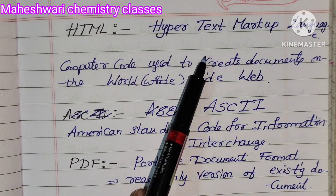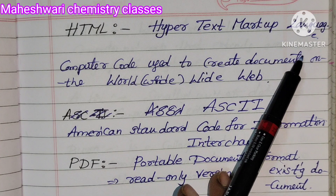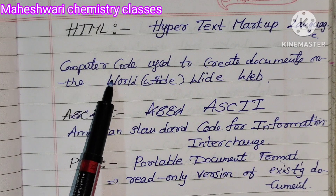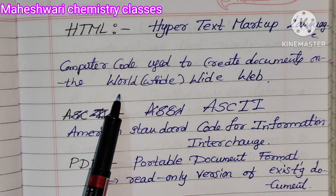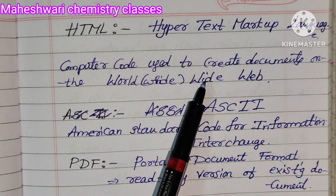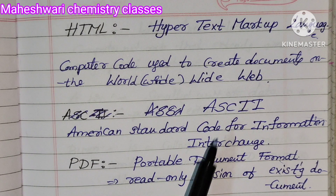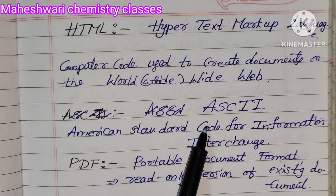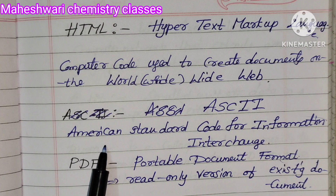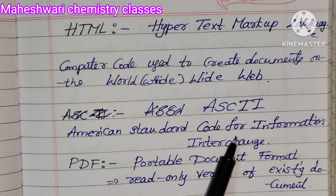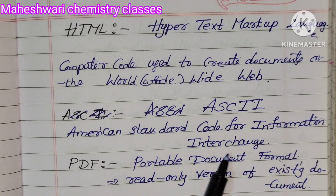HTML — Hypertext Markup Language — is computer code used to create documents on the World Wide Web. ASCII — American Standard Code for Information Interchange.